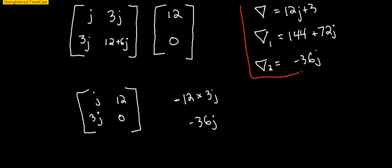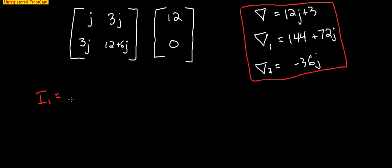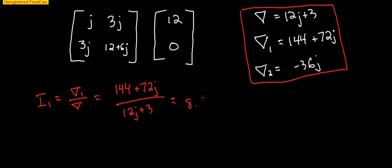Now, once we have all of these values, we can solve for i1 and i2. I1 equals del 1 over del. And this will equal 144 plus 72j divided by del is 12j plus 3. And if you punch this into your calculator, this equals 8.47 minus 9.88 or 13.01 with an angle of negative 49.39.